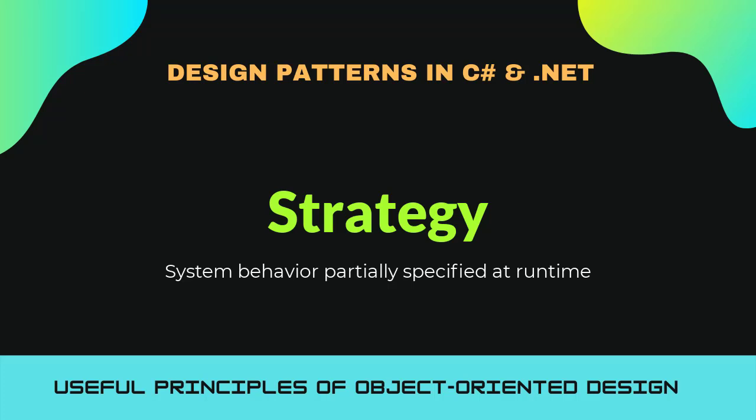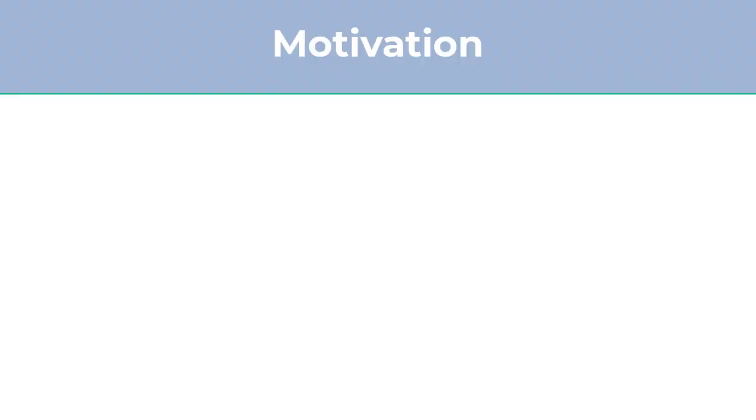In this section of the course we're going to take a look at the strategy design pattern. This basically allows you to partially specify the behavior of a system and then augment it later on. So that may have sounded a bit cryptic, so let's talk about what this is all about.